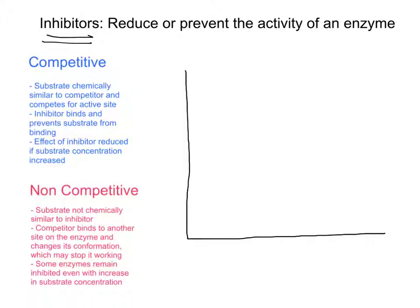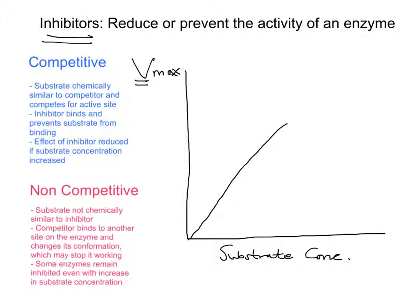On the x-axis of this graph we have substrate concentration, and up the y-axis we have V for velocity, with V max marked at the top — so this is the rate of reaction. Normally, without any inhibition, we get a curve where as you increase the substrate concentration, the rate of reaction increases up to a point and then plateaus.